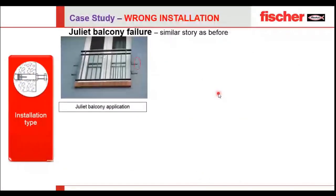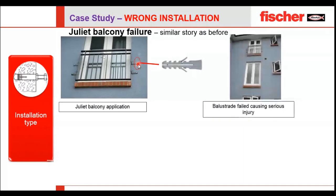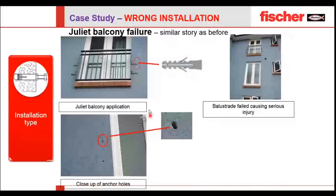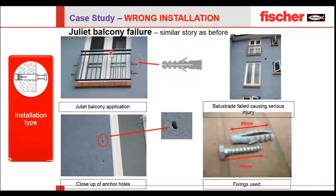Moving to wrong installation — which most people face on site. A real example is this Juliet balcony failure. You can see a beautiful balcony and its installation. A plug was used for the installation, but this balustrade caused serious injury. Looking more closely, you can see the hole made for the plug is double the required size — it was not properly drilled. When the installation went wrong, this balcony collapsed.